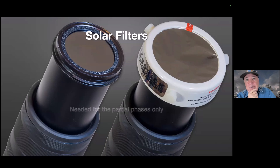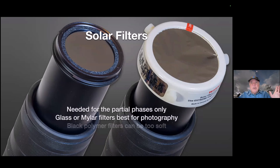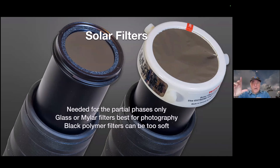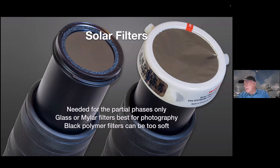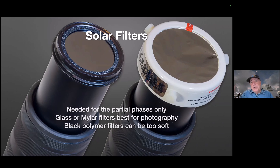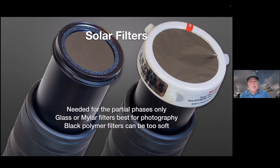First, solar filters. You've got to have proper solar filters for the partial phases. For the April eclipse you need a solar filter on your lens or telescope for the partial phases, but it's got to come off during totality. I prefer glass or mylar filters. The filter I used over my 4-inch telescope for the annular eclipse is a mylar filter with a sun finder aid from Kendrick. There's also a black polymer type of filter, but I find those were too soft for photographic use and scatter the light too much.